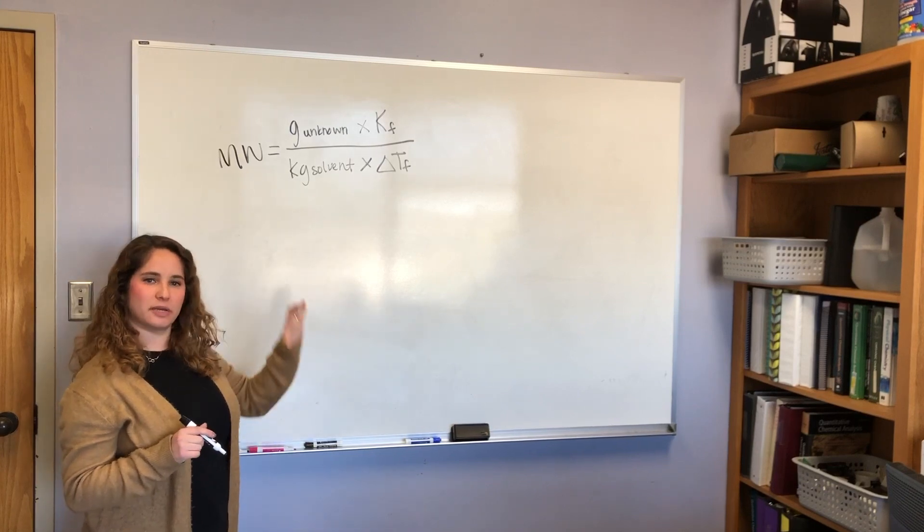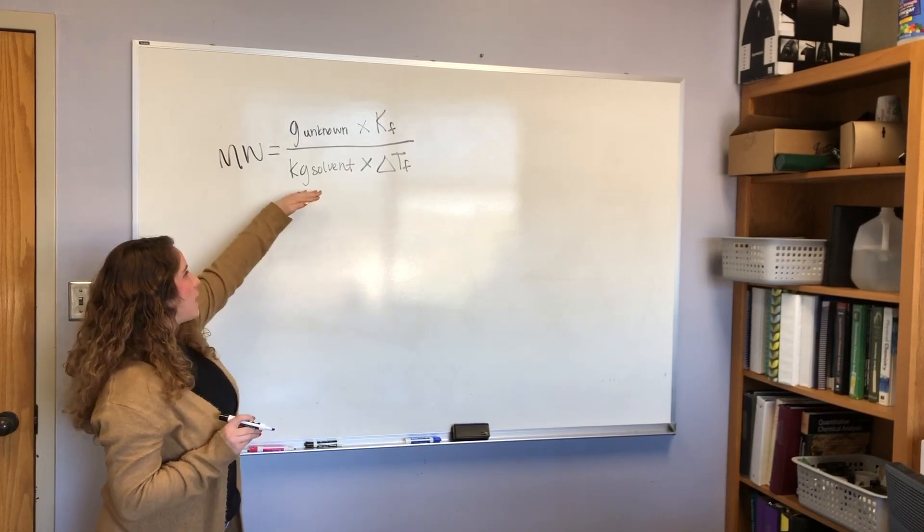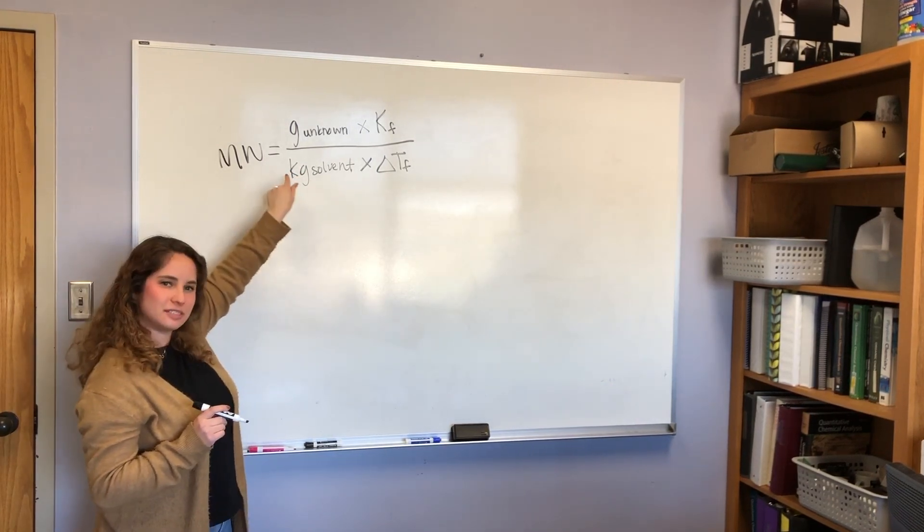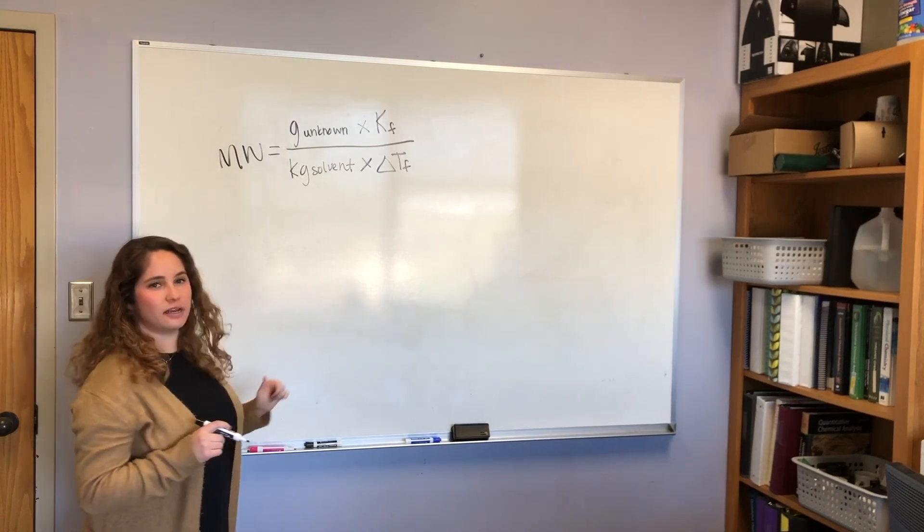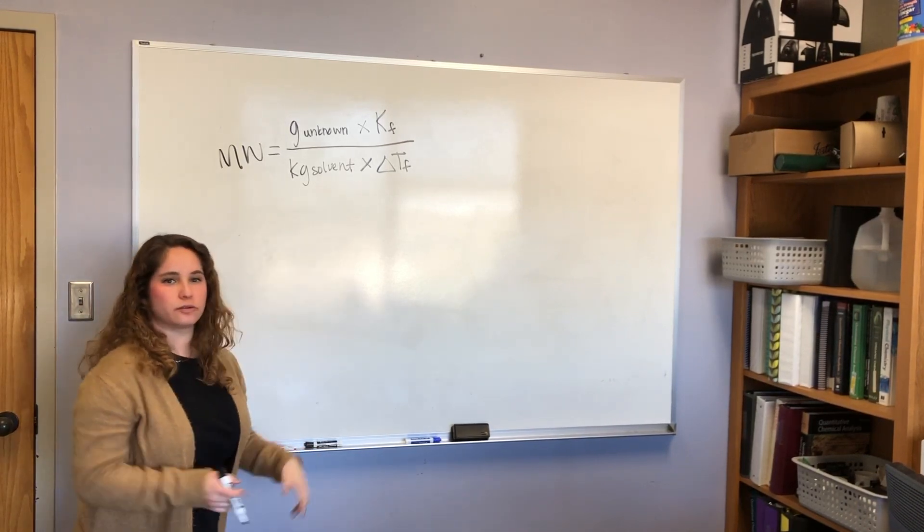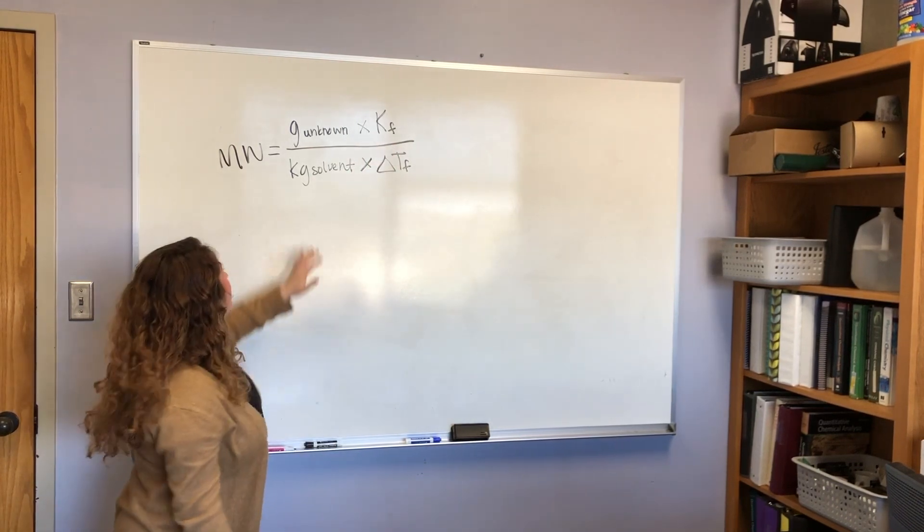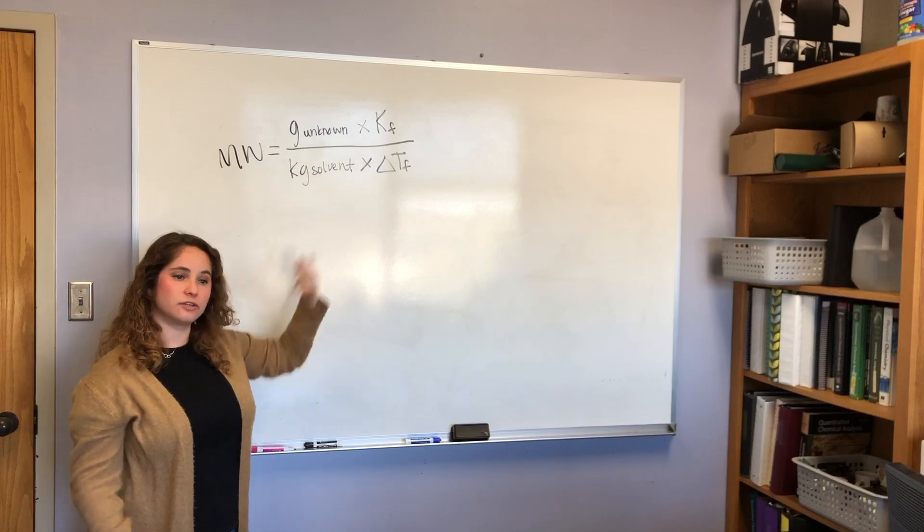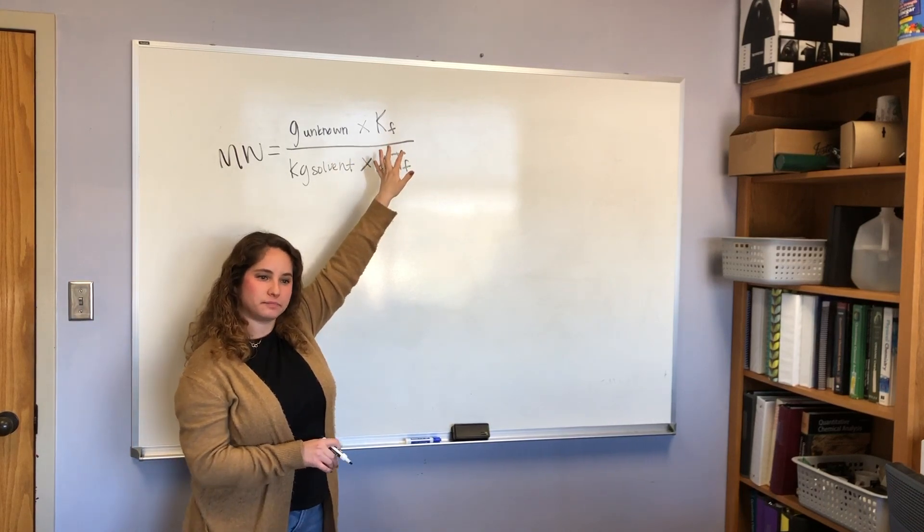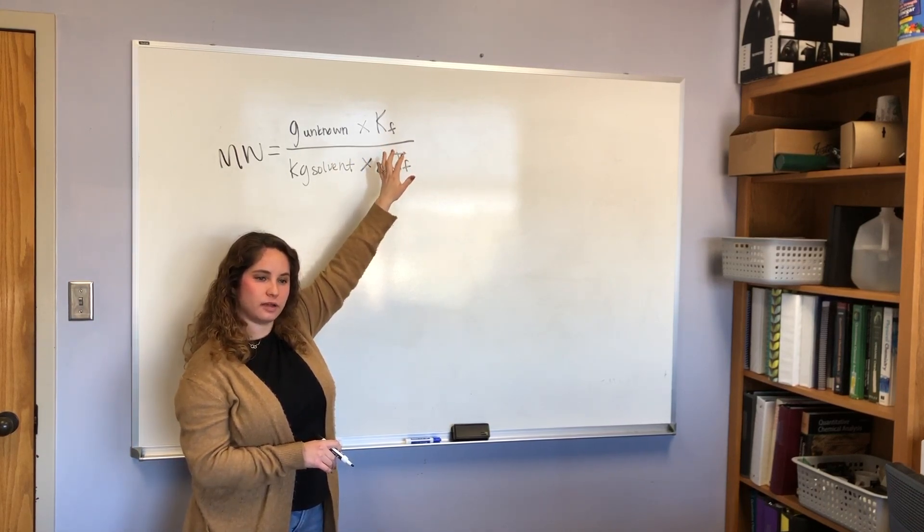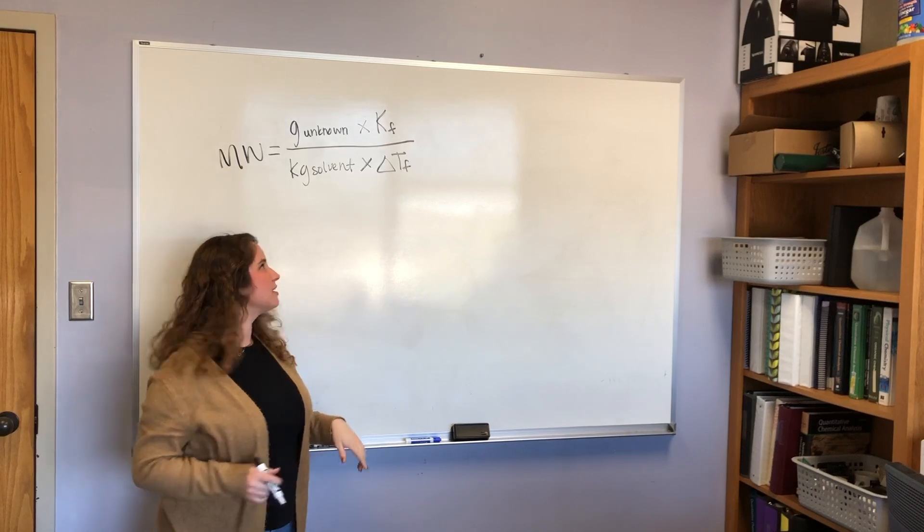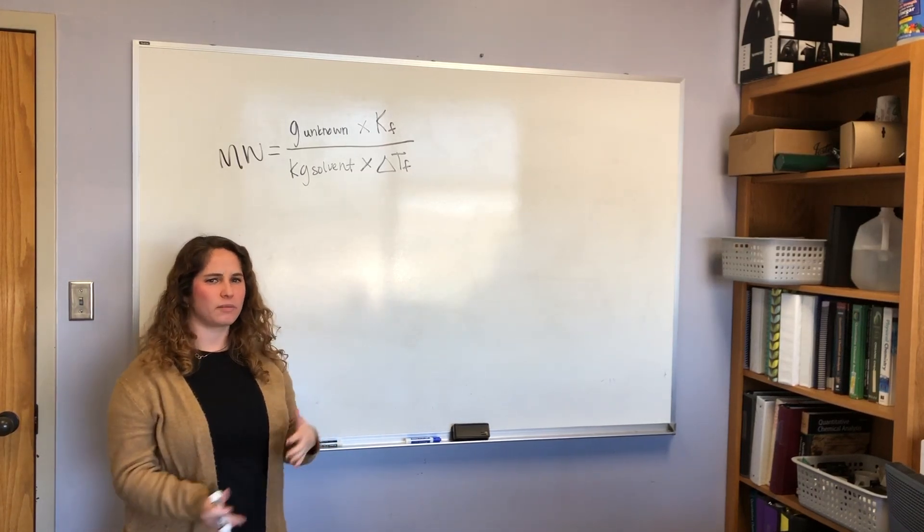The other main mistake that students make is instead of converting their solvent to kilograms, which is actually outlined in the data sheet, it has you measure in grams and then convert it to kilograms. If you accidentally use grams of solvent, you're going to have a number down here that is 1,000 times bigger than it should be, which means your molecular weight could end up being a thousand times smaller than it's supposed to be. So those are the two main areas where students really mess up because this is a constant, it's provided to you, and this is just a number that you got off the scale. So usually that goes pretty well for most people. The KF is actually provided at the end of the experiment.